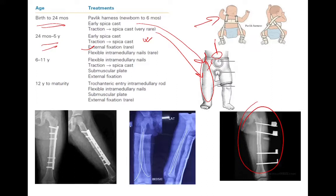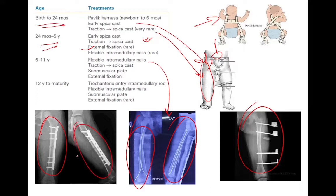From 6 to 11 years, flexible intramedullary nails — also called TENS nails — are often the treatment of choice. Other options include traction, submuscular plating, or external fixation. Submuscular plating involves open reduction and internal fixation of the fracture using a plate.